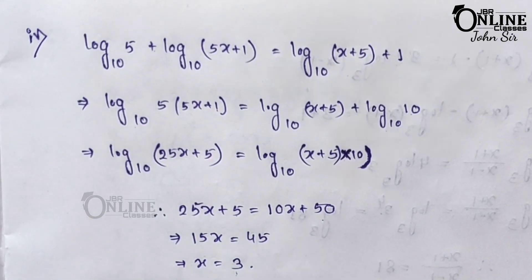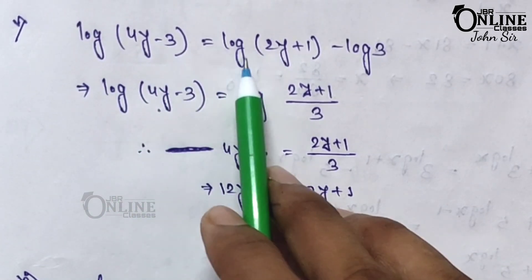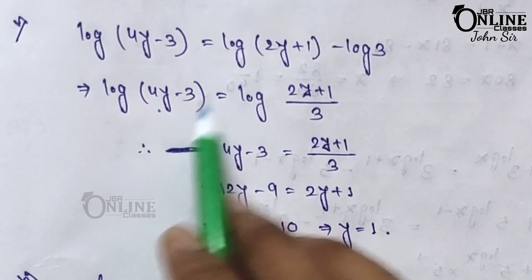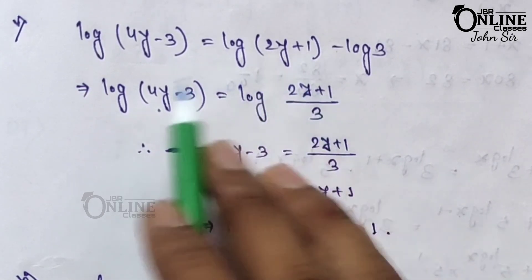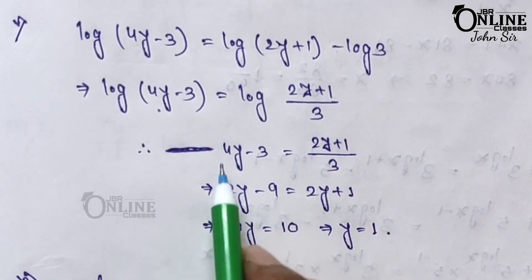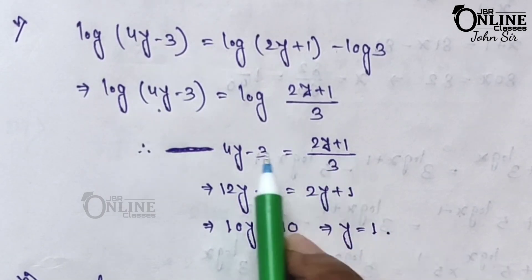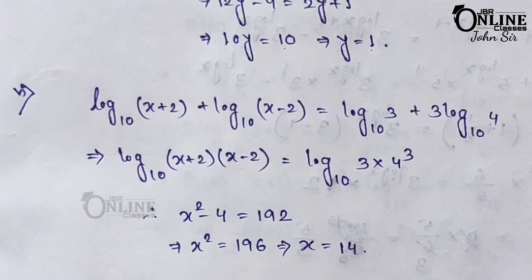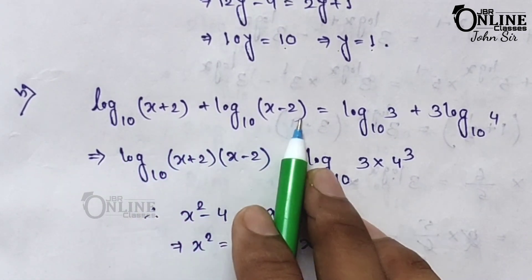Fifth equation: log(4y − 3) = log(2y + 1) − log 3. The right side, having a minus, becomes log[(2y+1)/3]. Comparing both sides: 4y − 3 = (2y+1)/3. Multiplying through by 3: 12y − 9 = 2y + 1, giving 10y = 10, so y = 1.